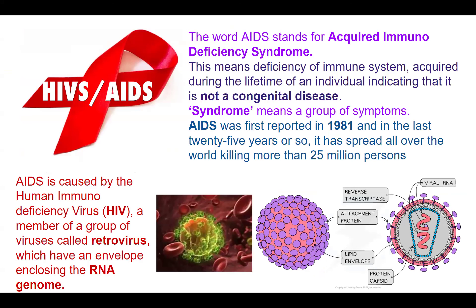Coming to autoimmune diseases — one of the most common is AIDS: Acquired Immunodeficiency Syndrome. There is a deficiency in immunity that is acquired during one's lifetime, not congenital. It is called a syndrome because it is a group of symptoms. AIDS was first reported in 1981 and in the last 25 years has spread all over the world, affecting more than 25 million persons.